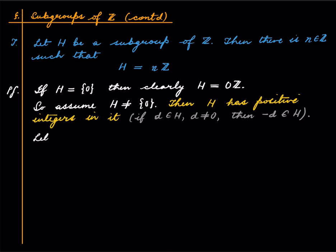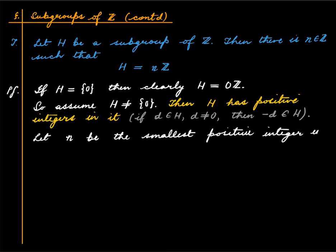Here is the key idea: let n be the smallest positive integer in H. Since there is at least one positive integer in H, there is a smallest one — every subset of natural numbers has a smallest element; this is called the well-ordering principle. So it is legitimate to pick the smallest positive integer in H. We claim that H = nℤ.